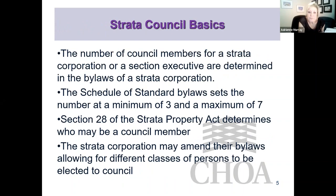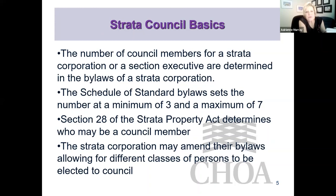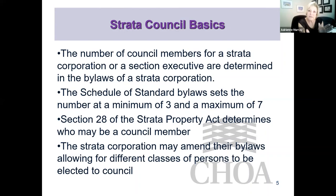Council basics: the number of council members is determined in the bylaws, and the standard bylaws say between three and seven. There was a case where owners wanted to restrict it to six at the time of election, but the CRT said that wasn't valid. To restrict the number, you need a three-quarter vote resolution that amends the bylaws and that amendment needs to be filed in the land title office. You can't limit it to a number less than seven at the meeting.